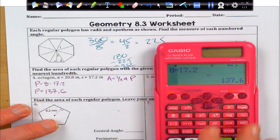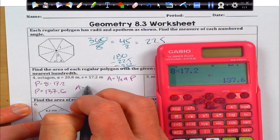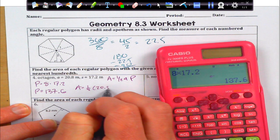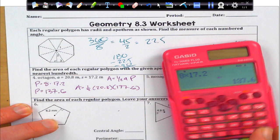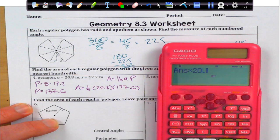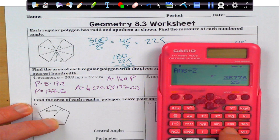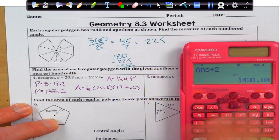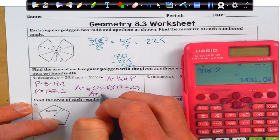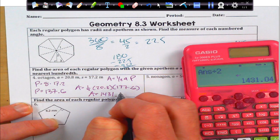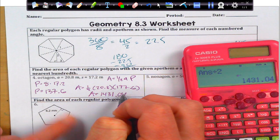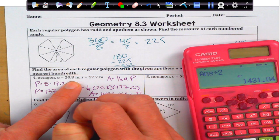With my apothem, I'm just going to plug into my calculator, 1 half, 20.8 times the 137.6. So, I times that by 20.8 and divide by 2 and then get my final answer of 1,431 point. It says nearest hundredth, so 0.4 and that's going to be in square meters.